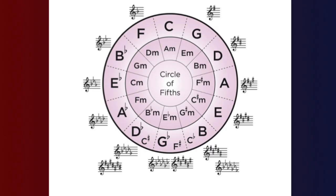On the circle of fifths there are major keys on the outer circle and minor keys on the inner circle. The key signatures we've looked at today also apply to what's called the relative minor. G major and E minor share the same key signature — one sharp, which is F sharp. Just bear that in mind; it's not a goal for you right now — get your major scales down first.